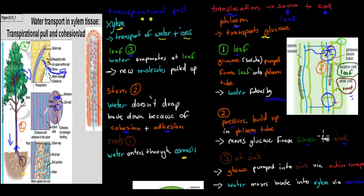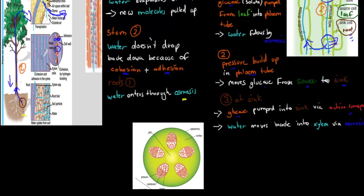And that's how glucose moves from the source to the sink. Once it actually gets to the sink, that glucose will be pumped into the sink through active transport. And because we now have less solute in the phloem tube, we will have water moving back by osmosis into the xylem. So water moves in at the top and moves back down again into the xylem tube, and we have glucose entering the phloem tube at the source and leaving at the sink. If you look at the actual xylem and phloem, they're actually really close to each other — the xylem is on the inside of something called a vascular bundle and the phloem is on the outside.